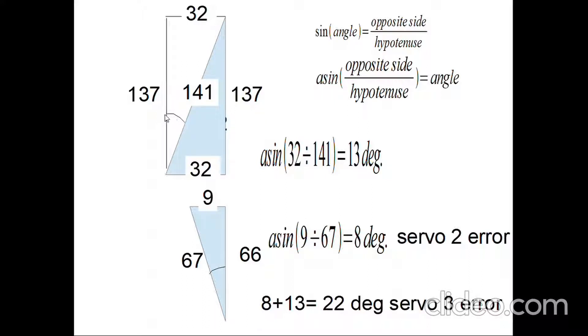For the bottom triangle, again using arcsin: the opposite side is 9, the hypotenuse is 67, so arcsin of 9 over 67 equals 8 degrees. You can do this on a scientific calculator — just make sure you're in degrees and not radians. What this is telling me is that the error in servo 2 is about 8 degrees.